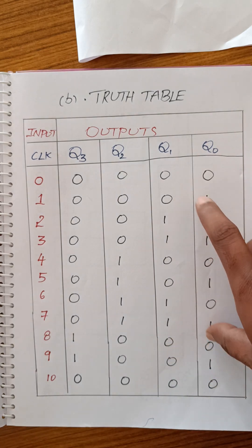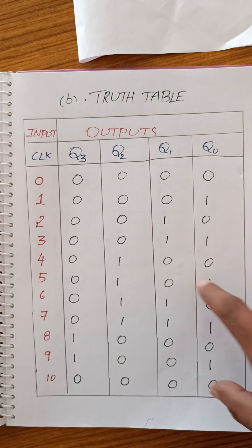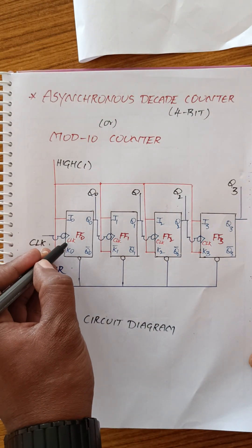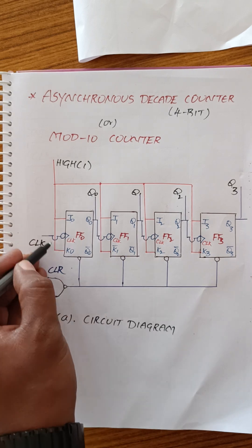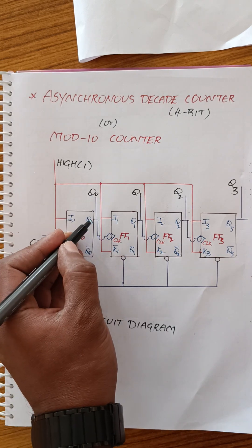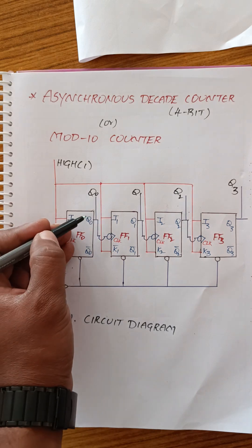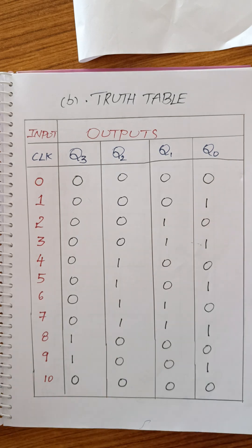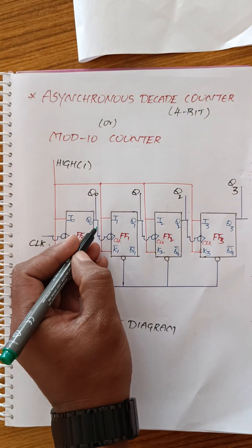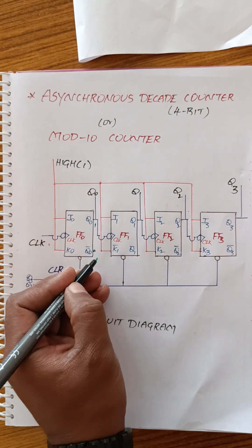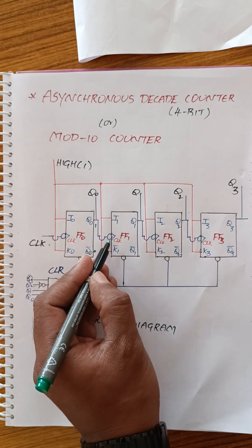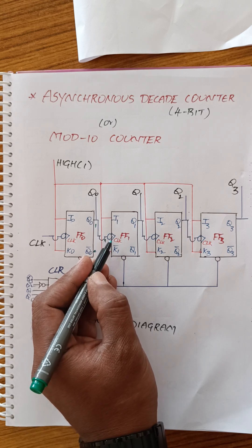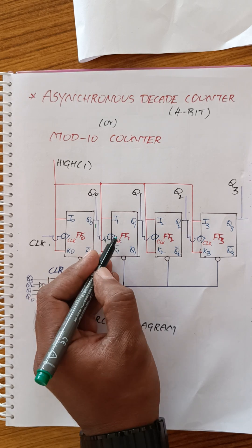On the first clock pulse, only the first flip-flop toggles from 0 to 1 — so Q0 becomes 1. Since JK is connected to high level, flip-flop 1 is in toggle mode: it toggles from 0 to 1. The clock signal reaching the second flip-flop has no bubble, so the output value from the first flip-flop is 1.